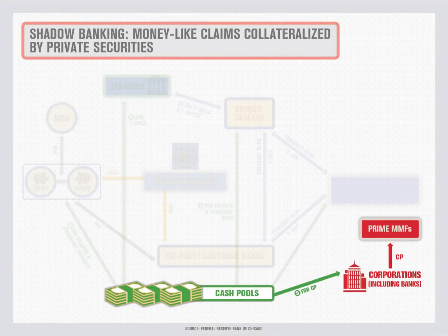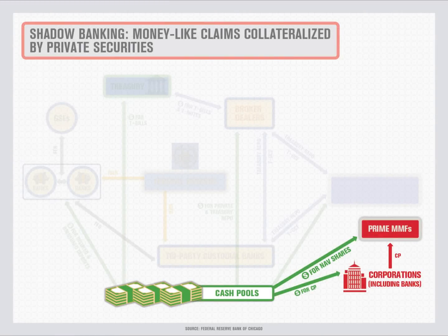Prime money market funds, like government-only money market funds, promise overnight liquidity by redeeming their shares on demand at a fixed price. But unlike government-only money market funds, prime funds invest in unsecured private assets with some default risk — for example, commercial paper with high credit ratings and maturities of 90 days or less. Cash pools can invest directly in commercial paper or indirectly via prime money market funds, which offer better liquidity and easy access to a diversified portfolio, making them an option with cash-like characteristics.